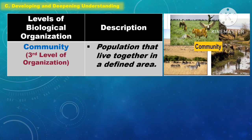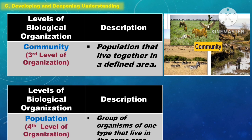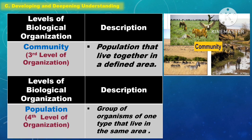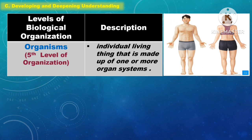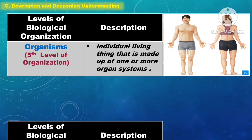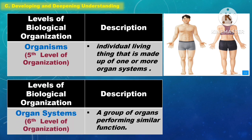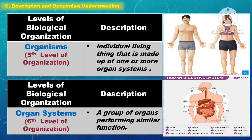The third level is the community — the populations that live together in a defined area. The fourth level is the population — a group of organisms of one type that live in the same area. The fifth level is the organism — an individual living thing made up of one or more organ systems. The sixth level is the organ system — a group of organs performing similar functions.